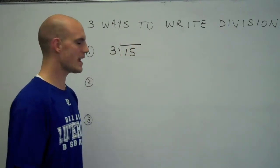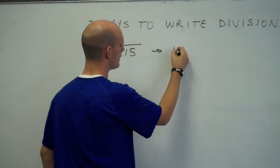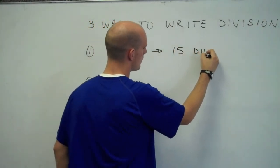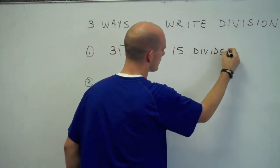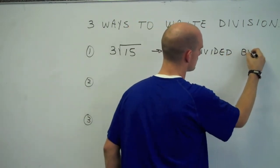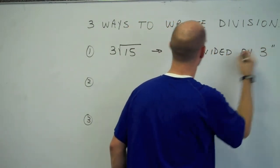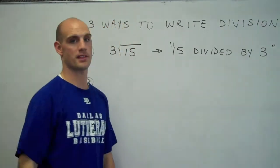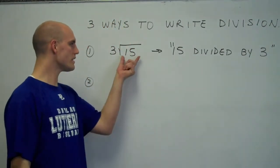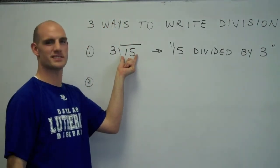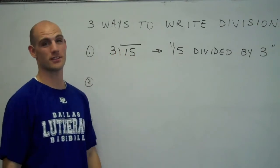Now, the way that we say this would be 15 divided by 3. Notice, what is being divided is inside. What they're dividing by is on the outside.